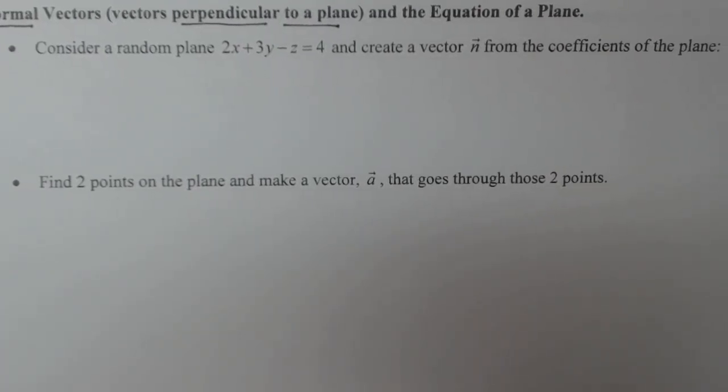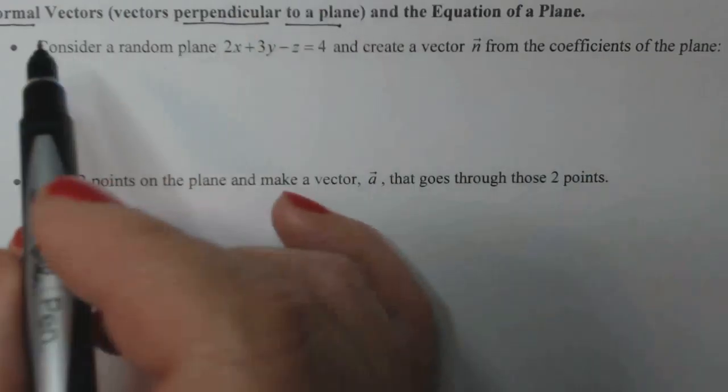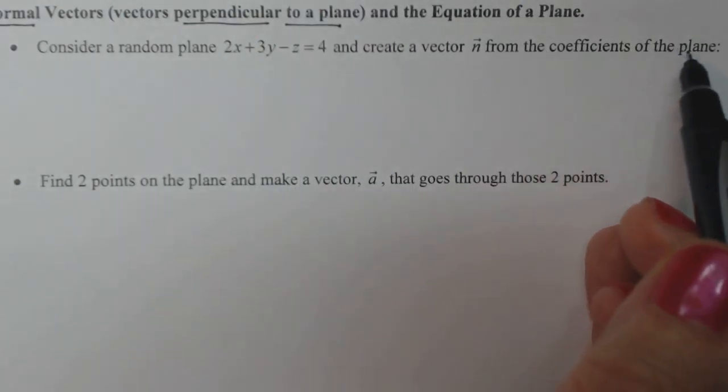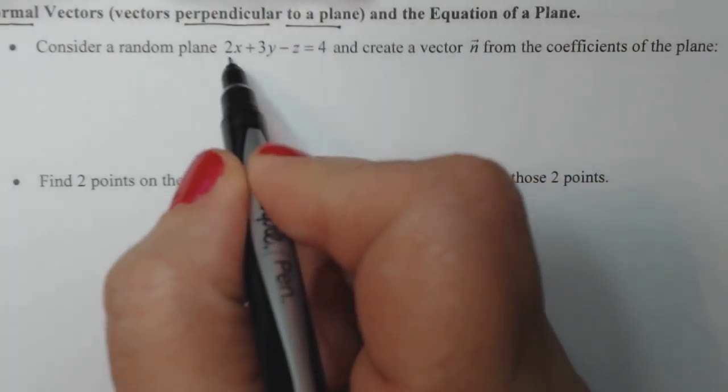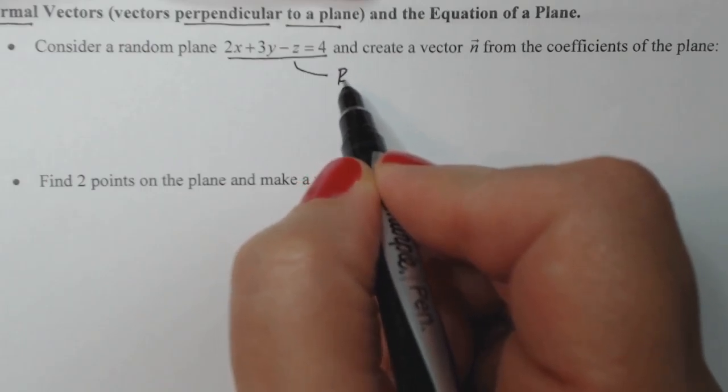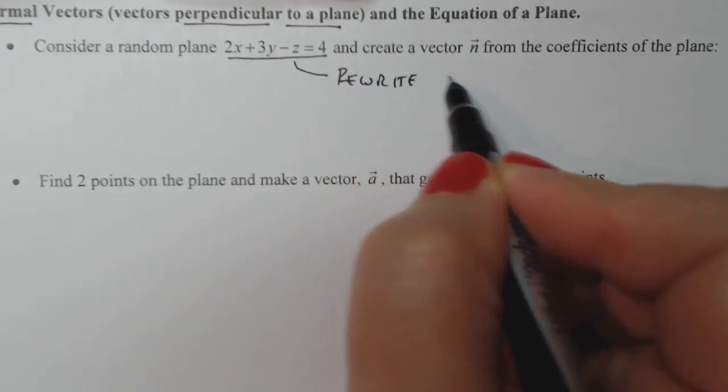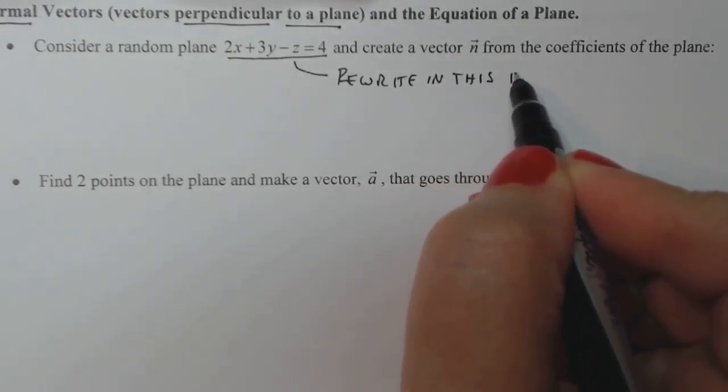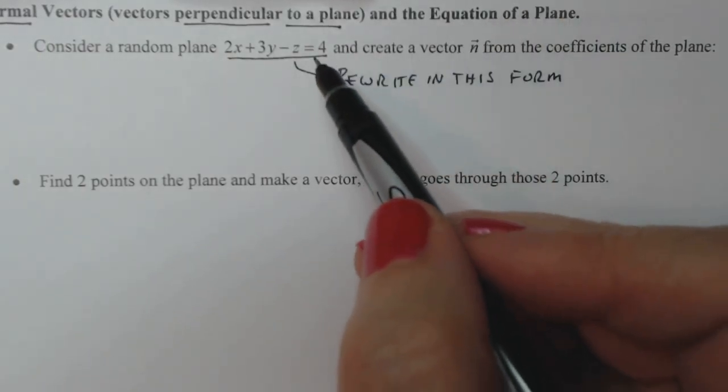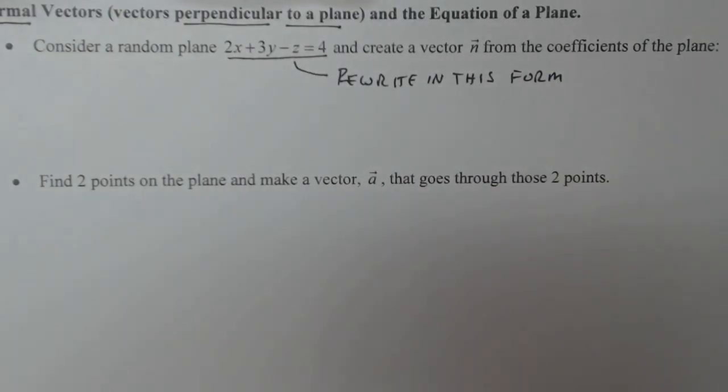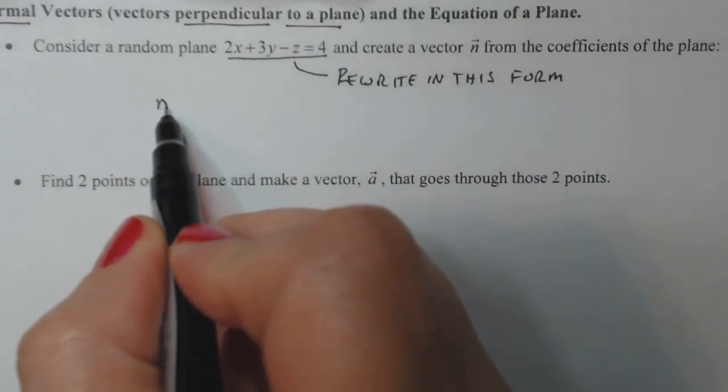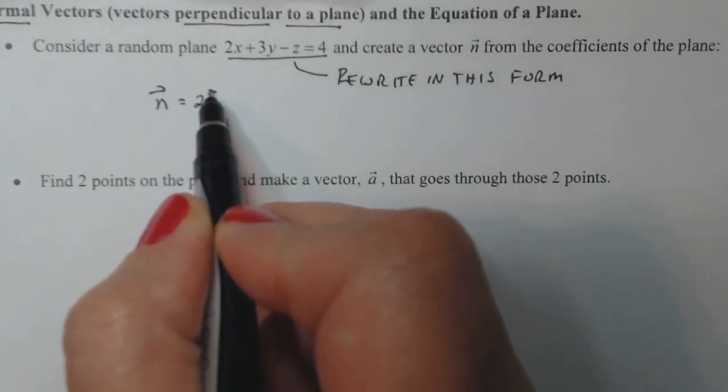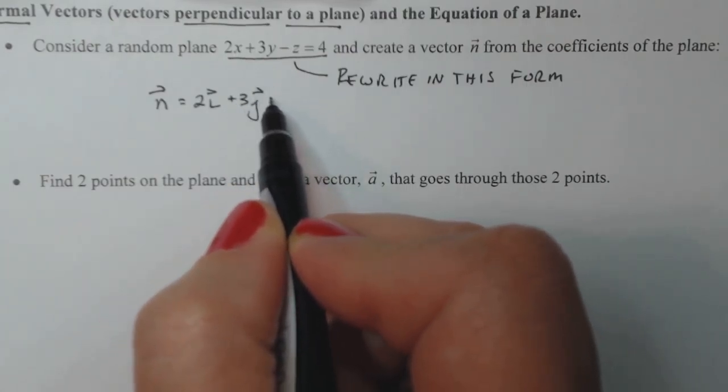Let's just follow the instructions and see what miracles happen. We're going to consider this random plane 2x+3y-z=4 and create a vector n from the coefficients of the plane. I'm going to rewrite the plane in this form. Normally our planes are z equals mx plus ny plus c, but in this case I've rewritten it so all the variables are on one side and the constant is alone on the other. In order for this to work, it has to be written in that form. Then I create my vector n. So n is equal to 2i plus 3j minus k.